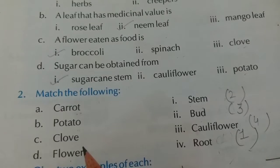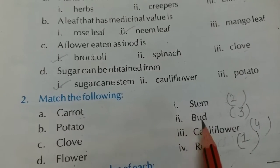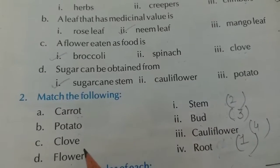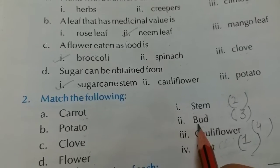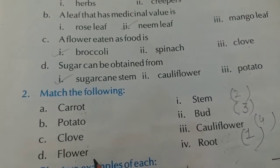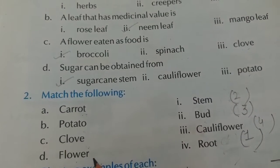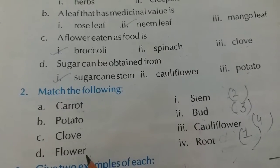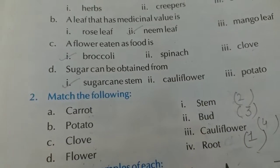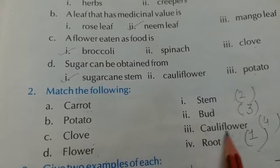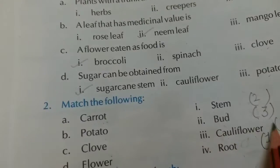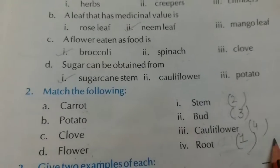Clove is the bud of the plant, so we write number 3 to match clove with bud. For flower — among the options, cauliflower is a flower, so we write number 4 to match flower with cauliflower.